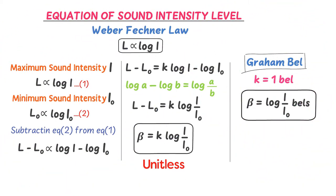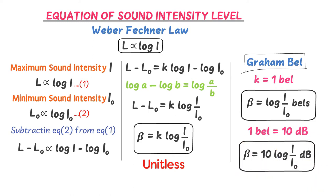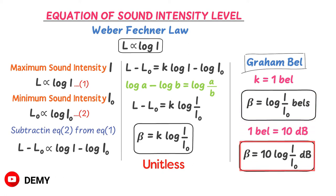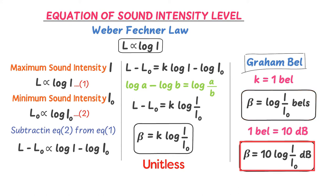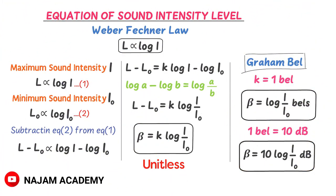What about decibels? Since 1 bel equals 10 decibels, the bel is a large-scale unit and the decibel is a smaller unit. We rewrite the equation as beta = 10·log(I/I₀) dB (decibels). This equation in decibels is different from the equation in bels — the bel version has no factor of 10. This was all about sound intensity, sound intensity level, and decibels.